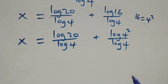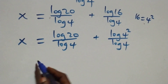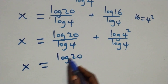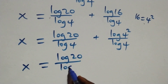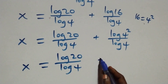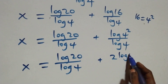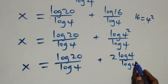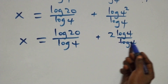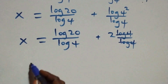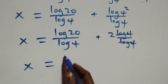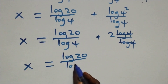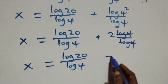We apply the power law of logarithms: the 2 comes down, giving us x equals log 20 over log 4, plus 2 log 4 over log 4. Log 4 cancels each other, leaving 2. This implies x equals log 20 over log 4, plus 2.